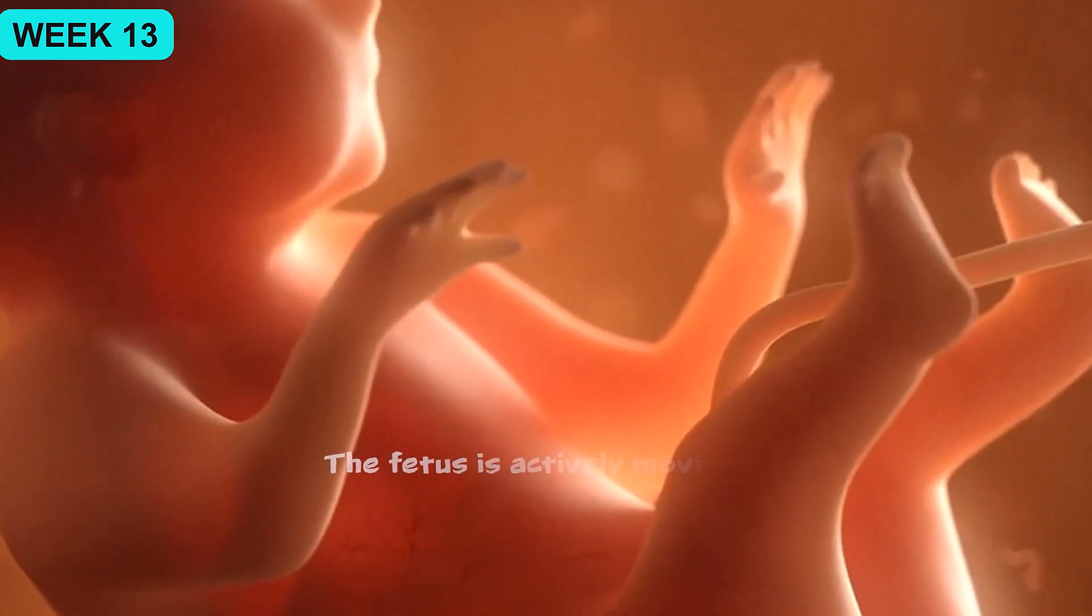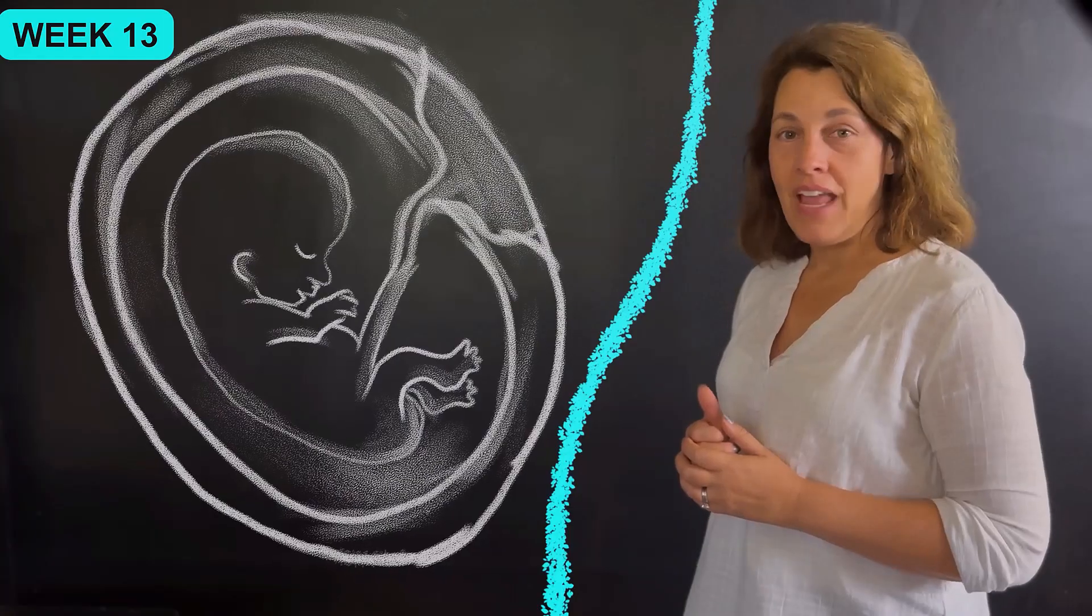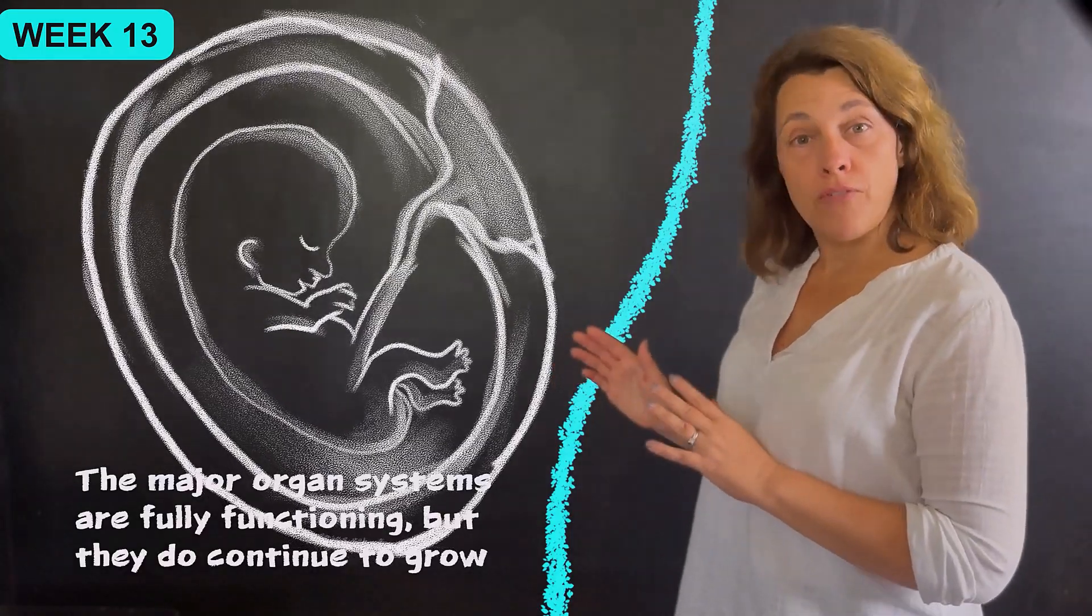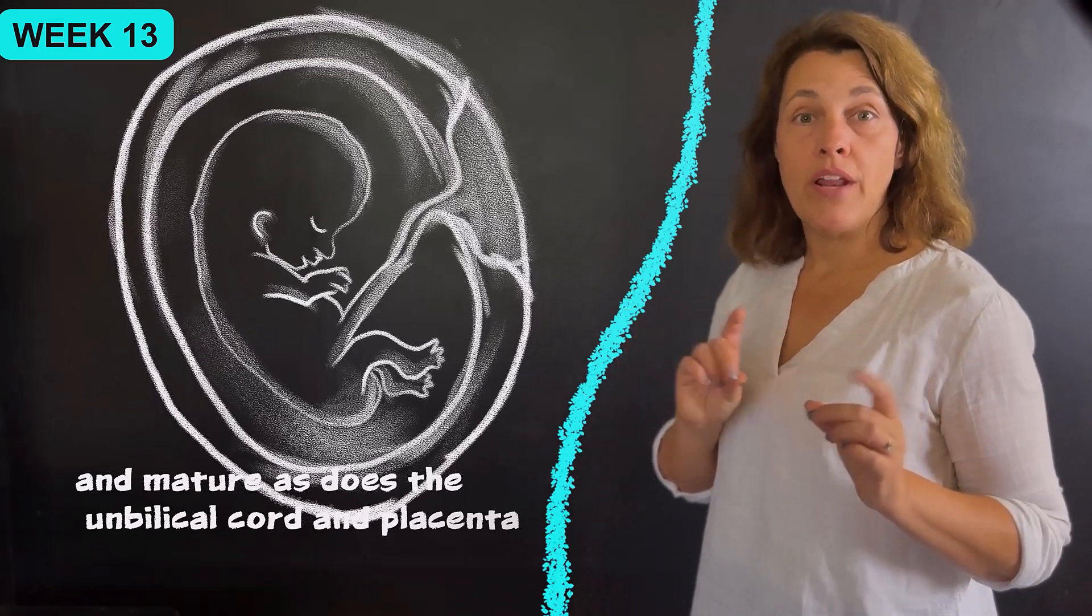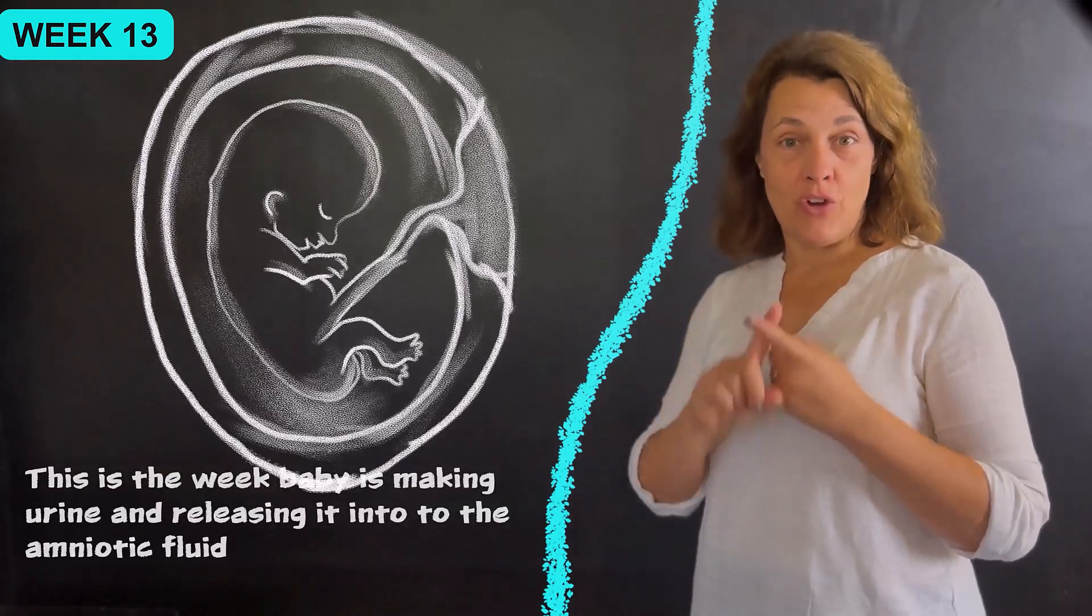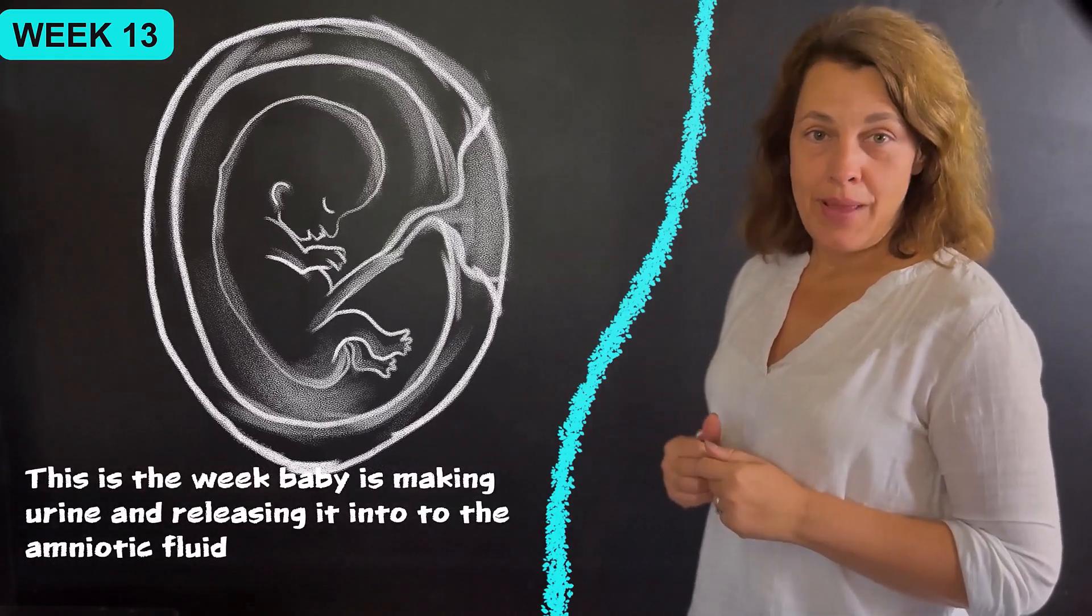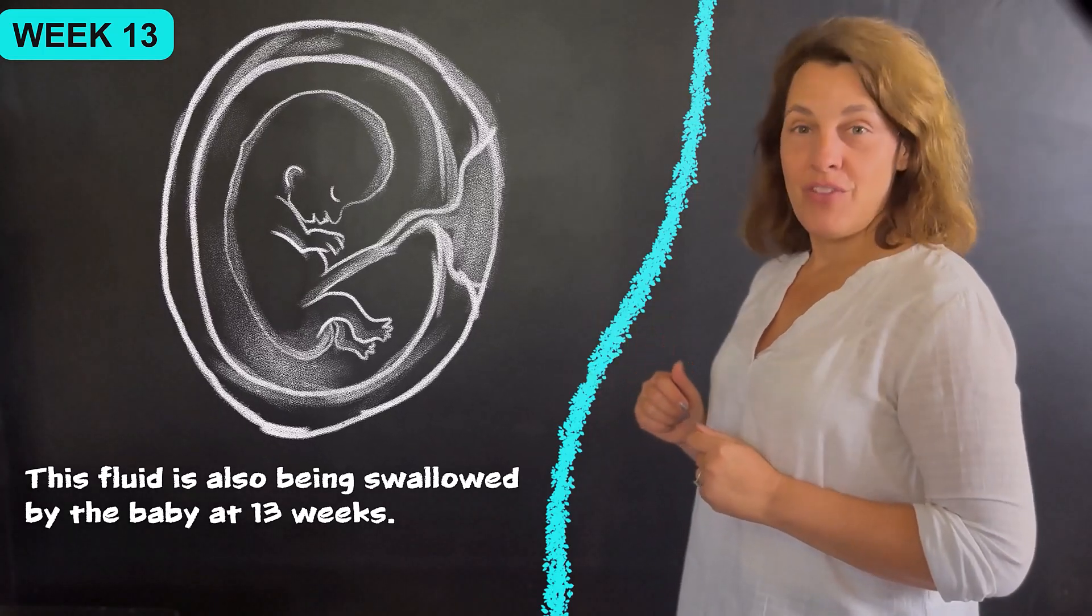The fetus is actively moving this week and you might start feeling that kicking, stretching, and flexing of their limbs that they're doing. The major organ systems are fully functioning, but they do continue to grow and mature, as does the umbilical cord and placenta. Now this is the week that baby is making urine and releasing it into the amniotic fluid. This fluid is also being swallowed by the baby at 13 weeks.